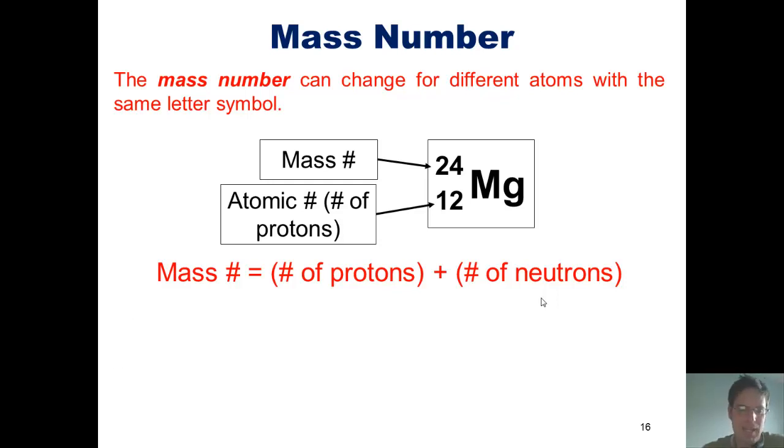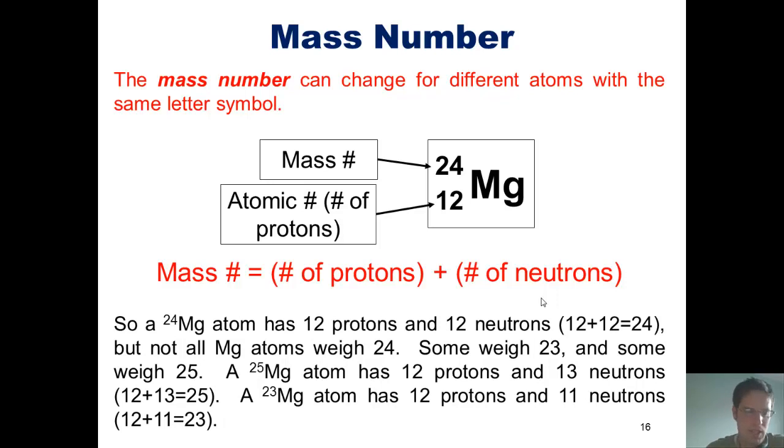By way of example, a magnesium atom has 12 protons and 12 neutrons. Thus, its mass is 24, because 12 plus 12 equals 24.